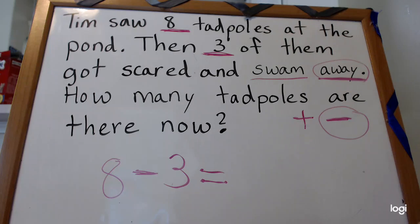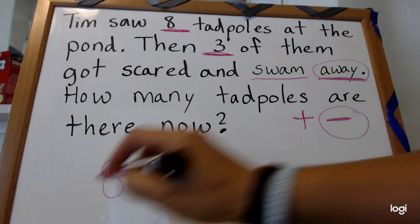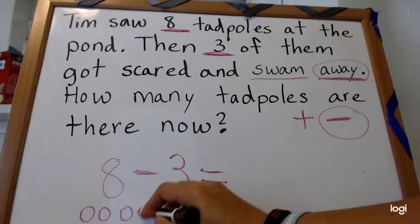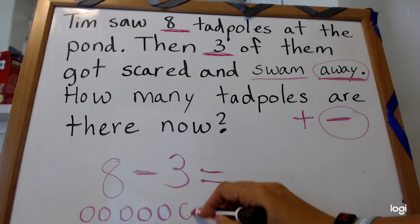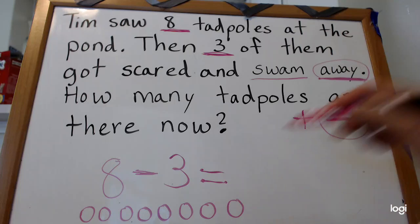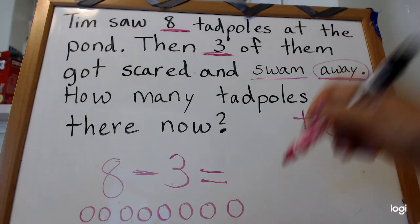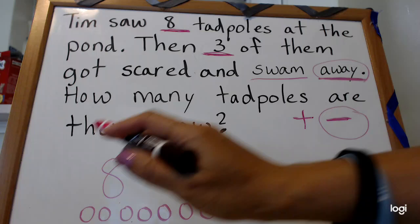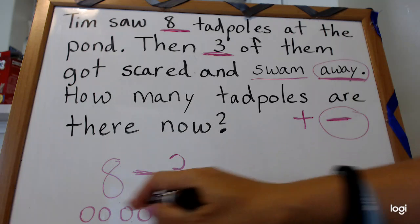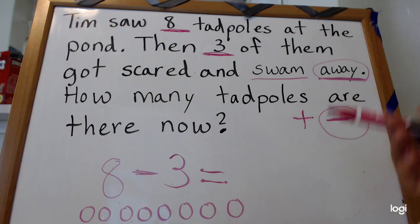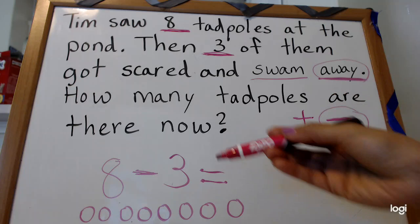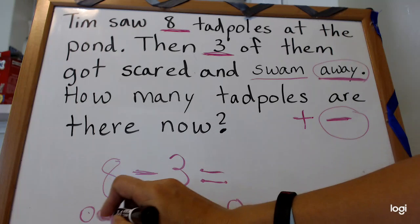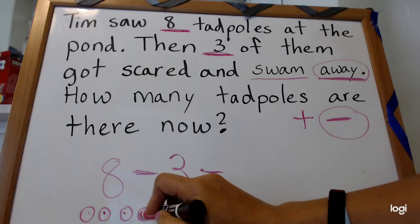So first I'm going to draw eight: one, two, three, four, five, six, seven, eight. But we always check to make sure we only have eight circles, because when we don't do that and we get the wrong amount of circles, our answer would be wrong and that would not be good. So it's always a good idea to double-check your circles. One, two, three, four, five, six, seven, eight. So I do have eight.